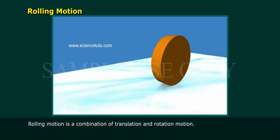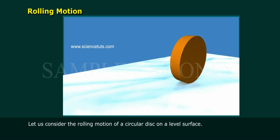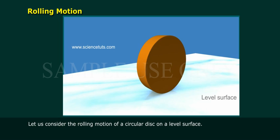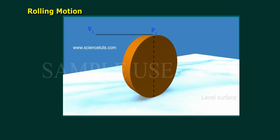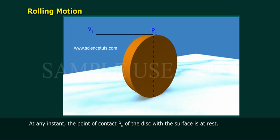Rolling motion: Rolling motion is a combination of translation and rotation motion. Let us consider the rolling motion of a circular disc on a leveled surface.